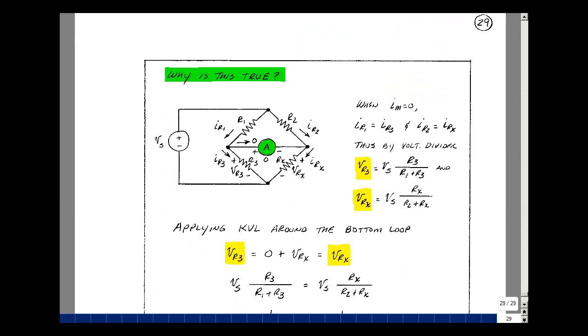Taking the Wheatstone bridge circuit from the previous page, let's assign some currents. I'll call the current in R1 I of R1, the current in R3 I of R3, the current in R2 I of R2, and the current in R sub x I of Rx. I'll assign the polarities based on Ohm's law of plus and minus for V sub R3 and plus and minus for V sub Rx. If you can vary the resistor R2 such that the current in the meter is zero, then the current R1 equals I of R3 and I of R2 equals I of Rx.